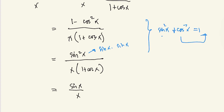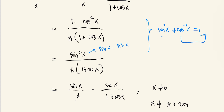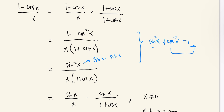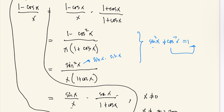This becomes sine x over x times sine x all over 1 plus cosine x, provided that x is not 0 and x is not equal to pi plus 2 pi n. If x is 0, the first factor becomes undefined, and if x equals pi plus 2 pi n, the second factor becomes undefined. Since we have an equality, we can take the limit of both sides.